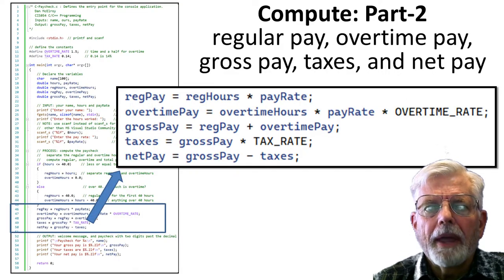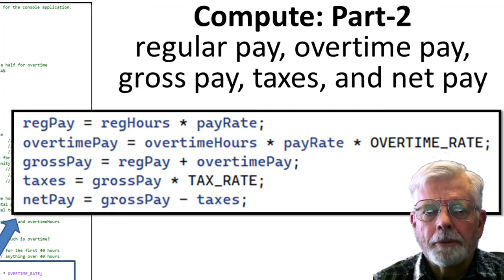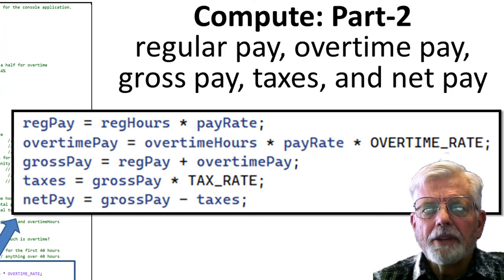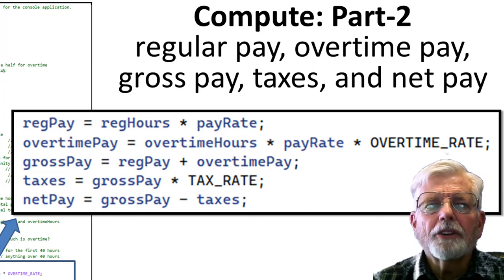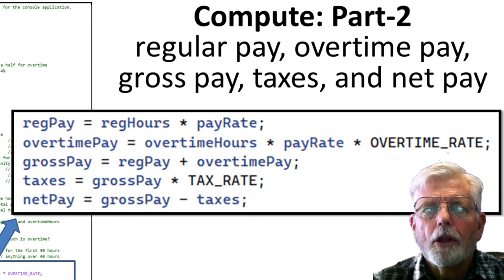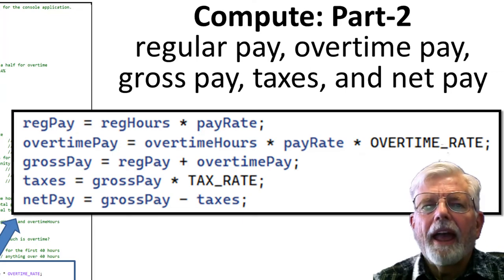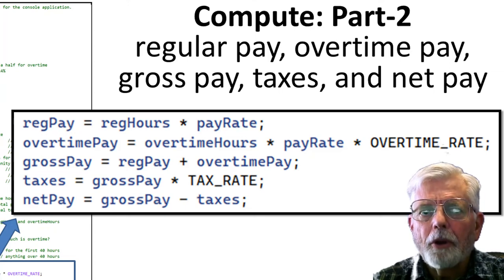The computations for regPay and overtimePay are fairly straightforward: regPay = regHours * payRate;. The overtime rate is the time and a half constant 1.5 from the top of the program. Gross pay is the amount before deductions or taxes are removed — it is the sum of regPay and overtimePay. Taxes are computed by multiplying the gross pay by the tax rate, which was defined at the top of the program. The net pay is what is left over after taxes or other deductions have been taken out.